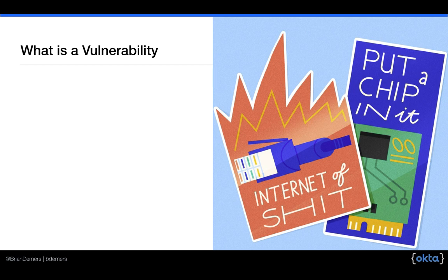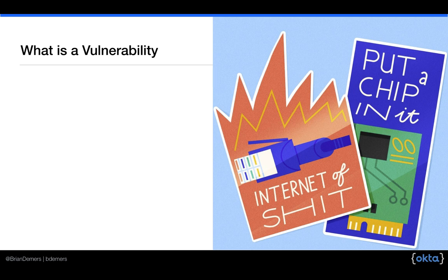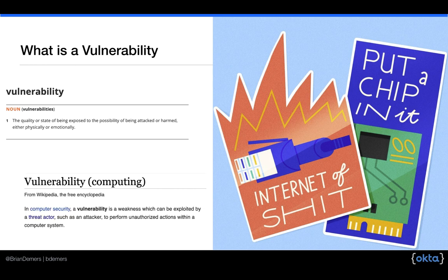First up, let's talk about what a vulnerability is. The Oxford Dictionary says it's the state of being exposed to an attack. Getting more specific about computing, Wikipedia says it's a weakness that can be exploited by an attacker. These are basically the same thing, but I get pretty emotional when somebody reports a vulnerability incorrectly on the projects I work on, so maybe they're the same.